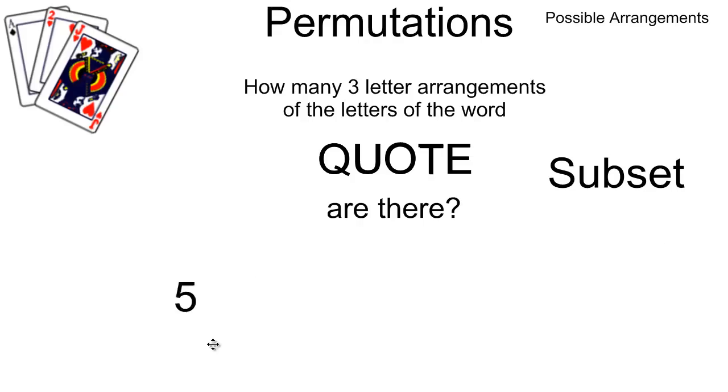It's helpful to put together little boxes so I know where I'm placing things. I have three positions. In the first position I have five letters to choose from, so I put a five there. In the second position, once one letter is gone, I have four possible letters. In the third position I can put three possible letters.